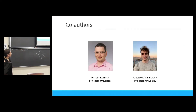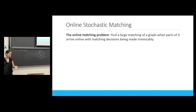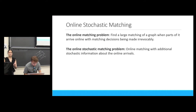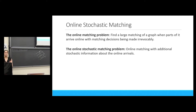This is joint work with Mike Braverman and Antonio Molina-Lovett. All the previous work talked about online matching, where the goal is to find a large matching of a graph when parts of the graph with their edges or vertices arrive online and we have to make matching decisions irrevocably. In this talk, I will discuss the online stochastic matching problem, where we have additional stochastic information about future arrivals and can use them to make better decisions. This has a wide range of applications in matching markets when items, services, or people arrive online.